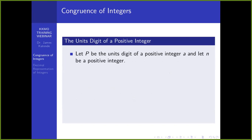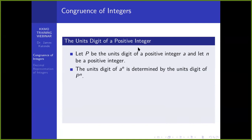Let's focus on the units digit for a minute. If p is the units digit of a given positive integer a, and n is another positive integer, then if I want to get the units digit of a raised to n, I simply need to get the units digit of p raised to n, where p is the last digit of a. I don't need to bother with the whole of a — I just need to look for the last digit of a and raise it to n.